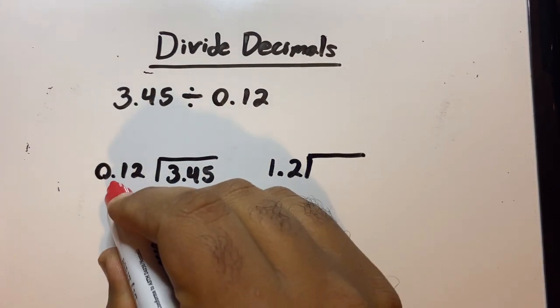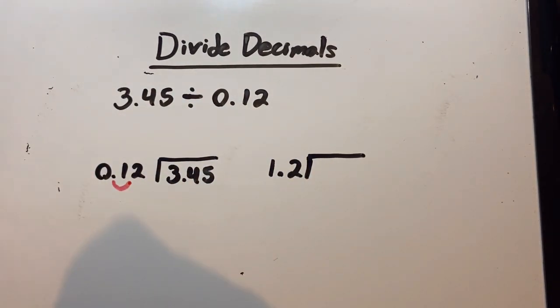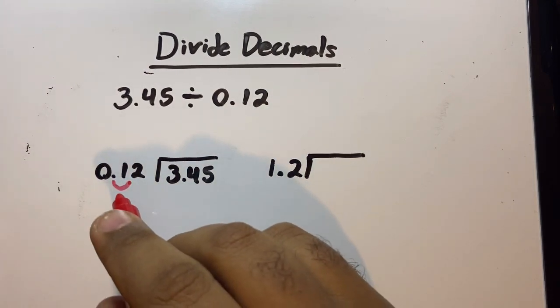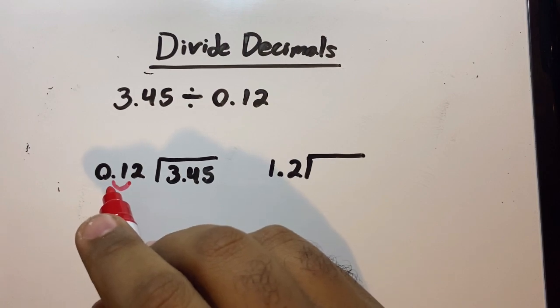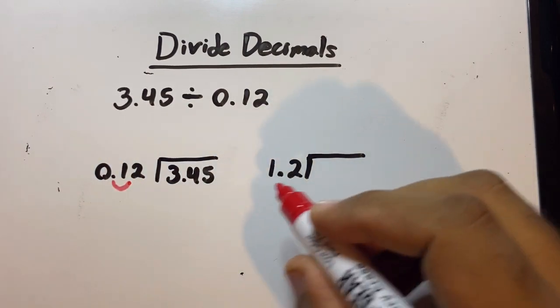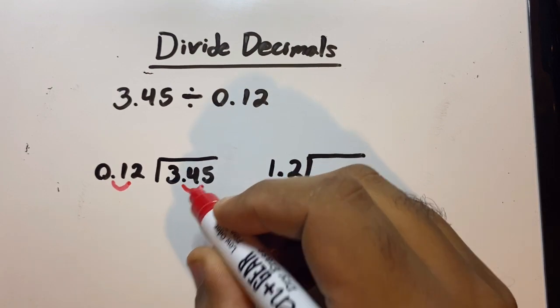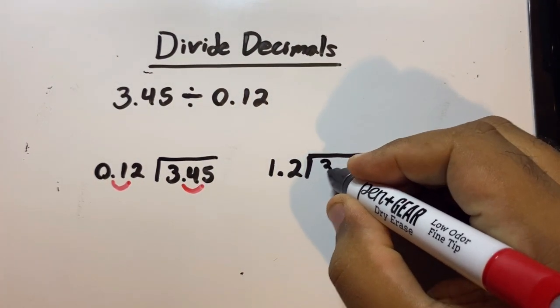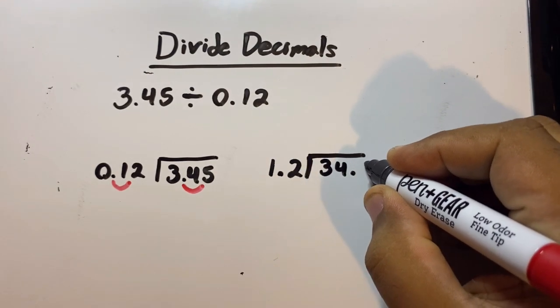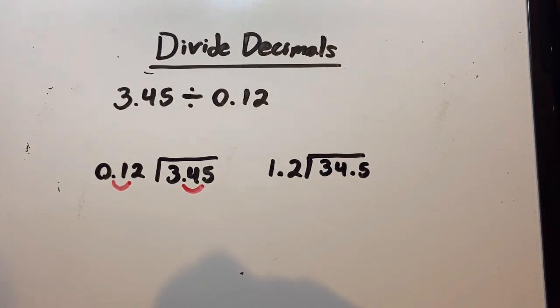That means I move this decimal point right here. Now, whatever I do to this number over here, I have to do to this number. So if I move this decimal point one time to the right, I gotta move this decimal point one time to the right. So now it should look like this: 34.5.